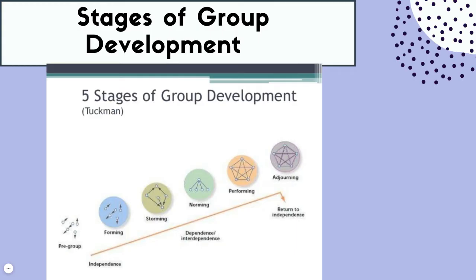It's important to know that groups go through these different stages. I suggest you take an example of a time you've worked in a group and walk through these different stages — you will probably find that your group went along this continuum as well. So we have forming, storming, norming, performing, and adjourning.